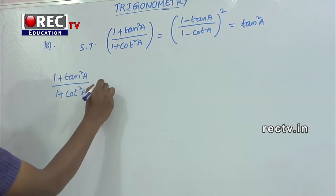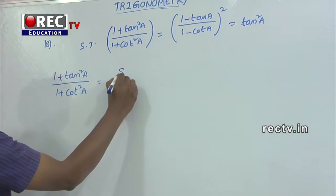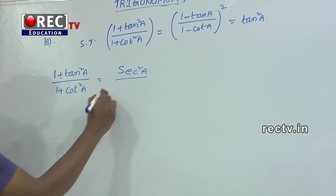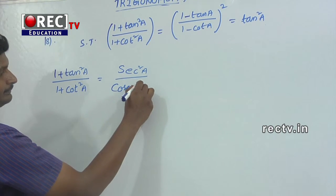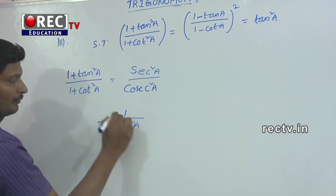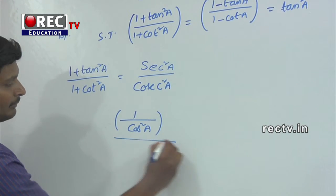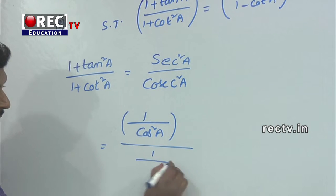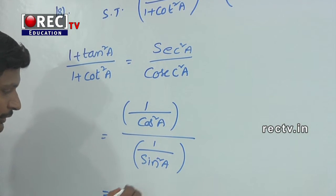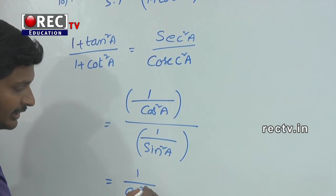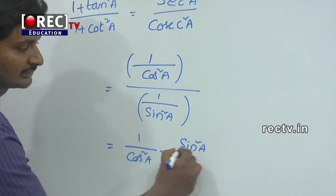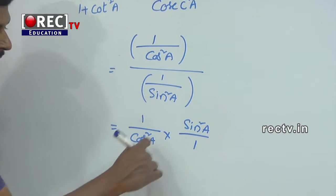From the trigonometric second identity, 1 + tan²a = sec²a. And from the third identity, 1 + cot²a = cosec²a. We can write sec²a = 1/cos²a and cosec²a = 1/sin²a. That gives us (1/cos²a) multiplied by the reciprocal, so sin²a / 1, which equals sin²a / cos²a.